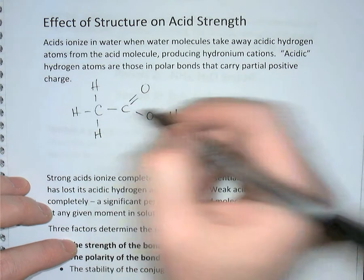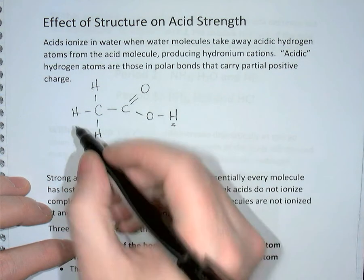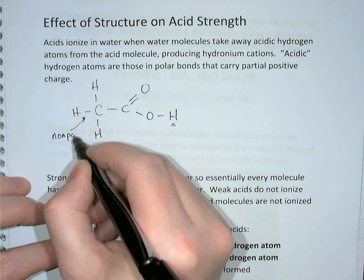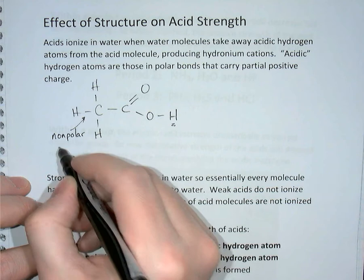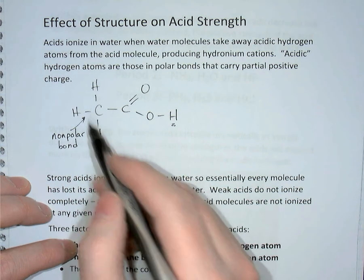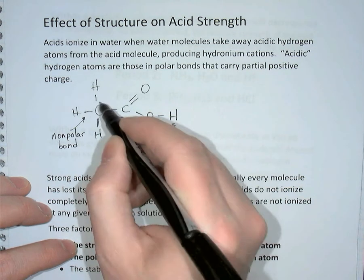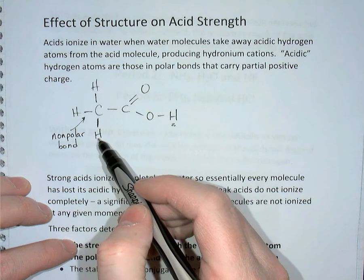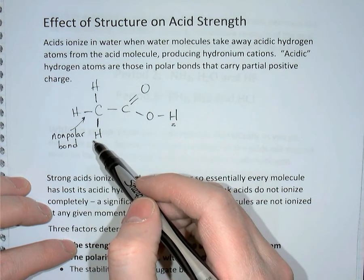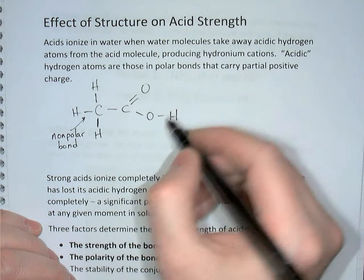Why is that? We know from earlier in the course that the carbon-hydrogen bond is nonpolar. The difference in electronegativity between carbon and hydrogen is so small that the electrons are shared equally. So these three bonds are all nonpolar, and therefore the hydrogen atoms and the carbon atom carry no partial charge — they're all essentially neutral atoms.